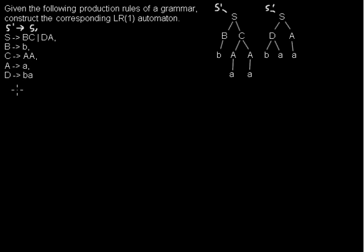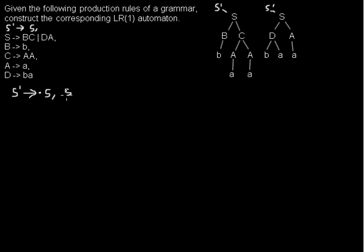We begin by pre-computing the states. In the first state, we use the rule S' → •S, meaning we haven't seen anything yet of S, so we write the dot on the left of S. We use a lookahead of one — we want to keep in mind what's behind that S. Since S spans the whole input, there's nothing behind it except the end of the word, so we write a dollar symbol for that.